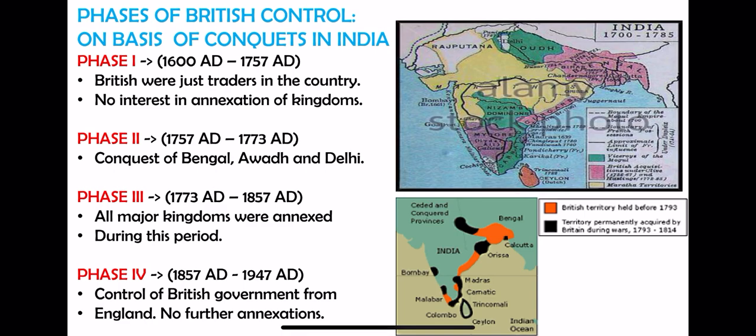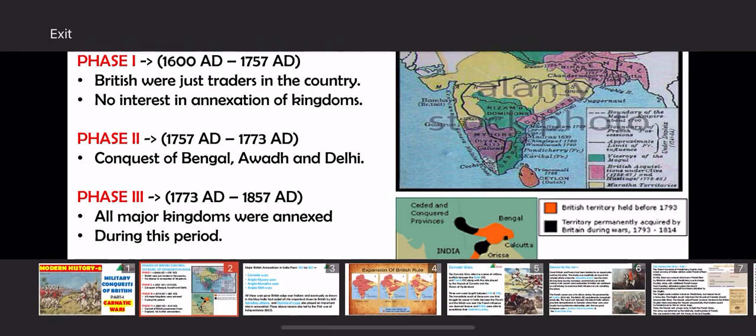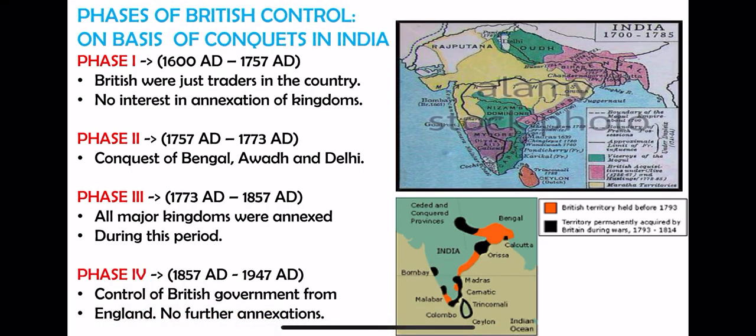Finally, from 1857 to 1947, control of the British government went directly to England — the Queen's control came in. It is a very interesting fact that after 1857 there were no official conquests made by the British in India. By 1947, British India comprised only 51 percent of modern-day India. All the annexations happened in Phase 2 and Phase 3.